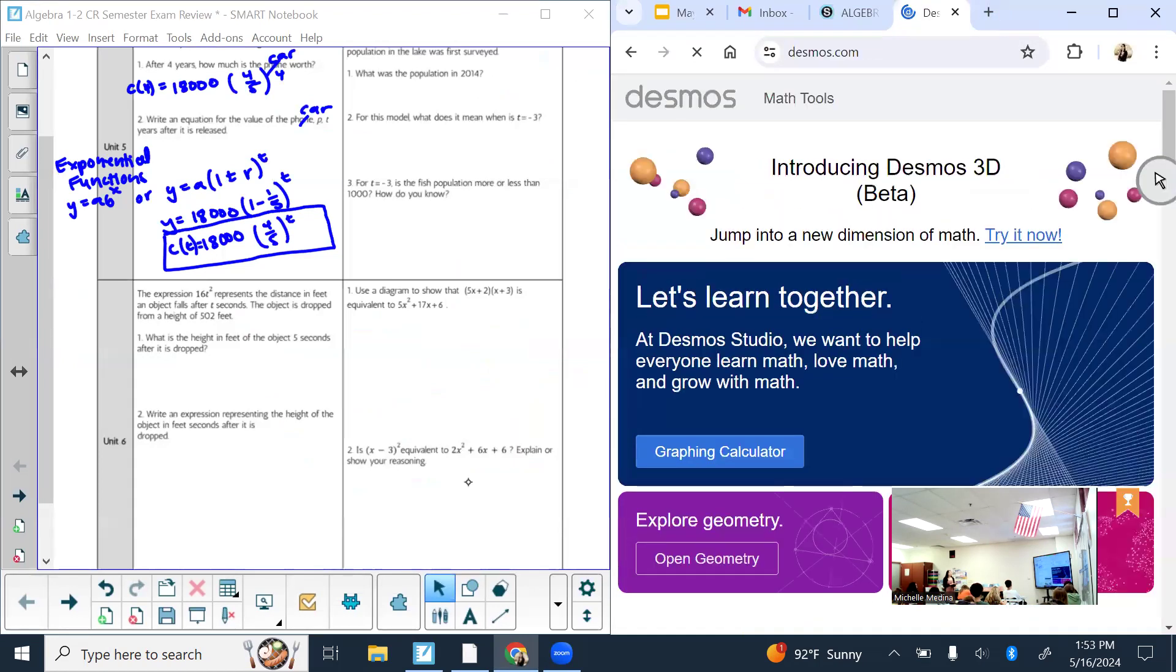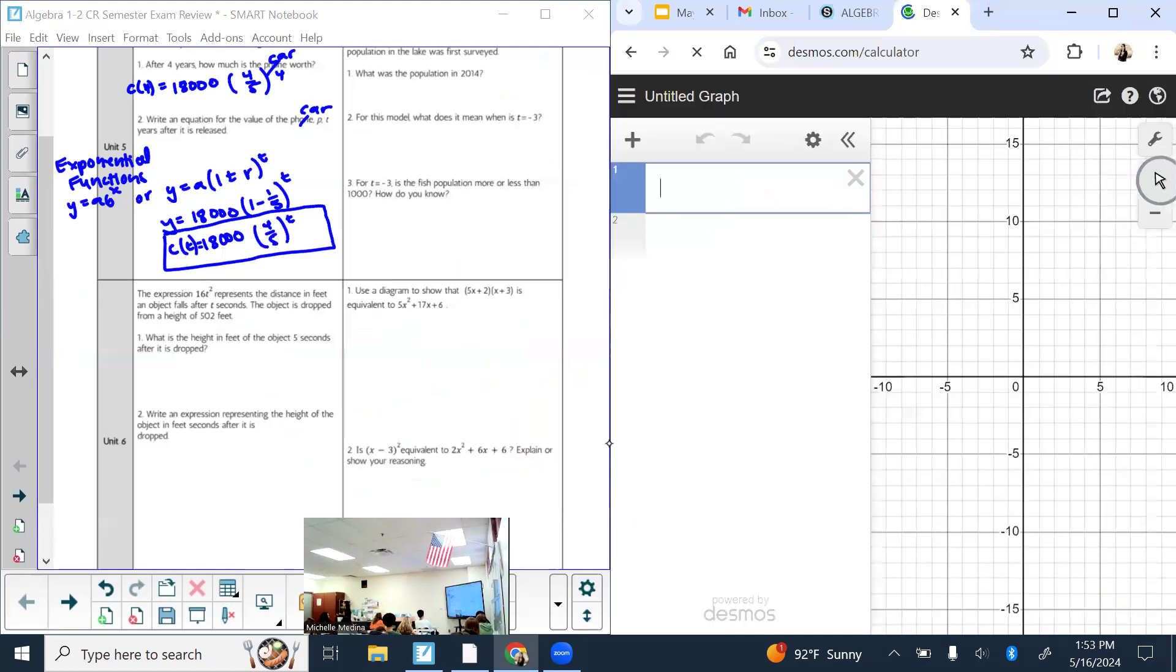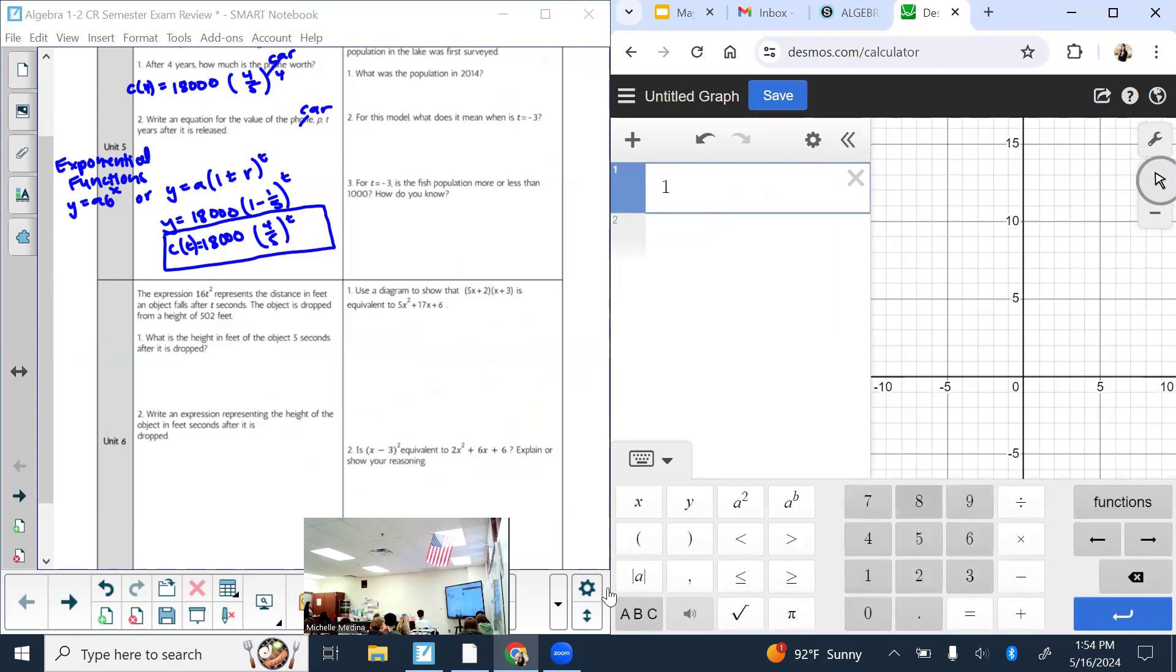They didn't want after four years. After four years was part one. For that, you would do this equation, but you would plug in four. You could problem solve your way through it too, like figure out how much a fifth of 18,000 is, and then figure out what a fifth of that value is. But instead, use the exponential function. Please, please, please use a calculator for exponential functions. There's really no way you could do them in your head.